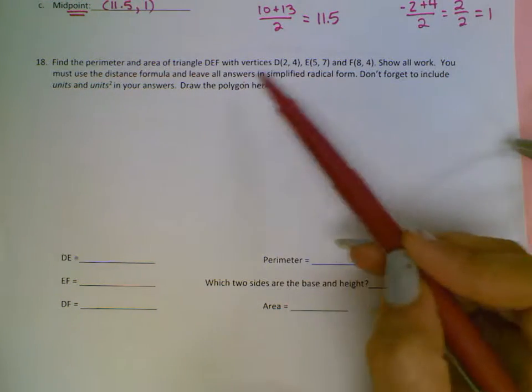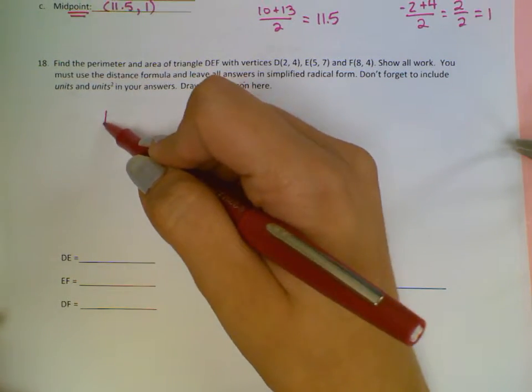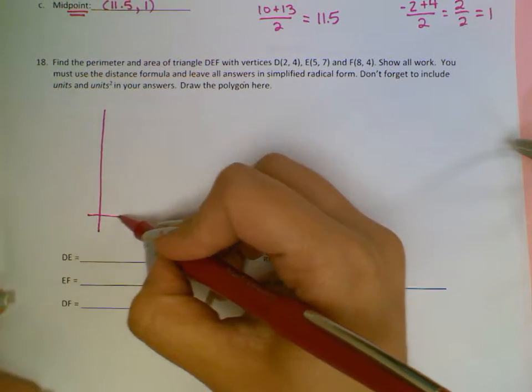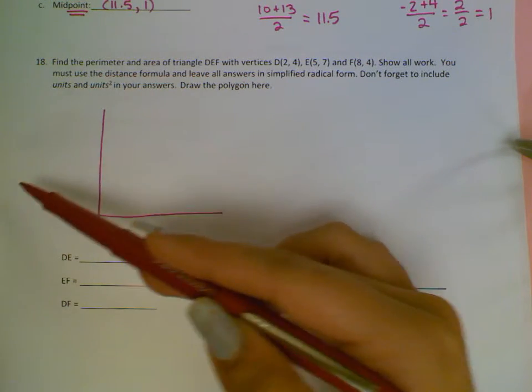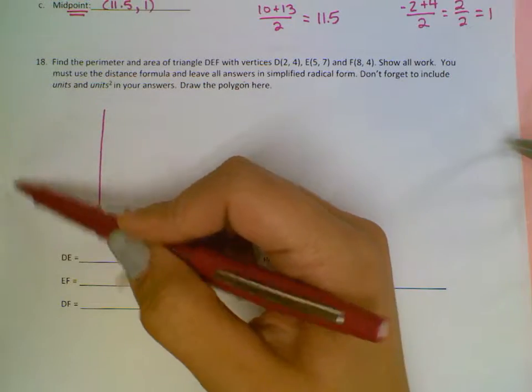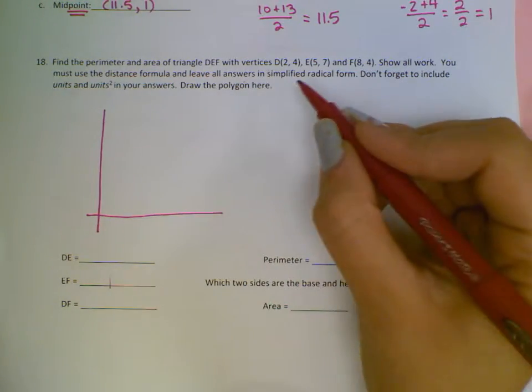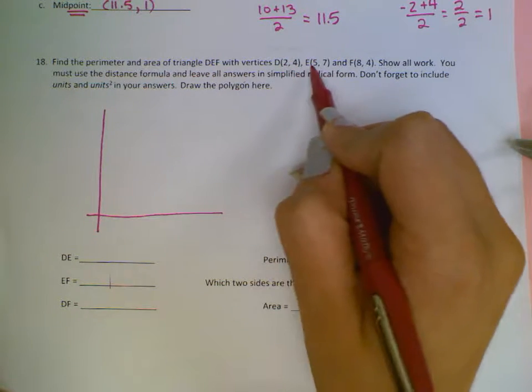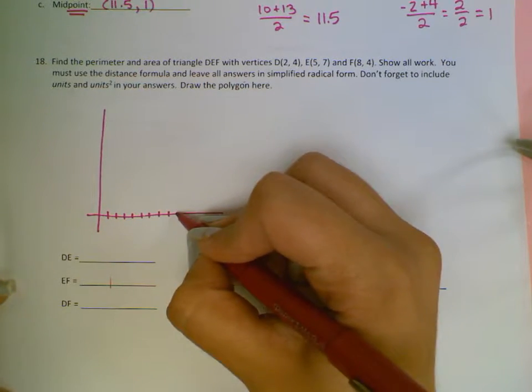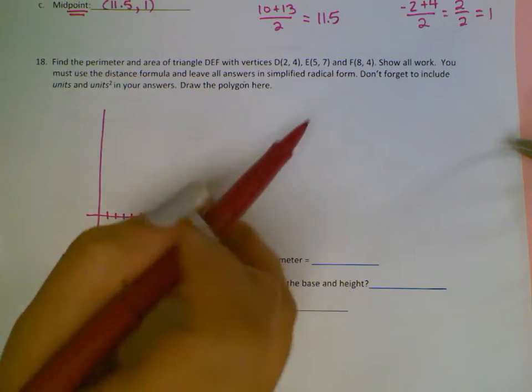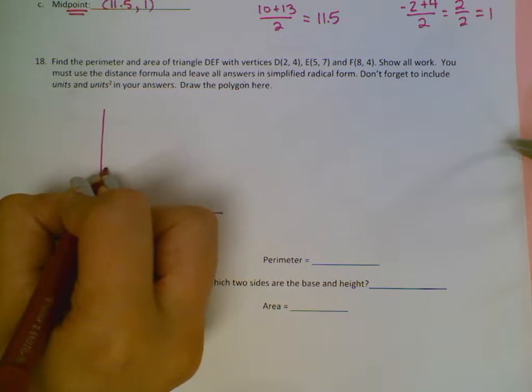I'm going to go ahead and draw a coordinate plane. Everything is positive. All these numbers are positive. So I don't need to worry about anything taking place in the negative quadrants. Because negative X would be in the left quadrants, and negative Y would be in the bottom quadrants. So my X's go from 2, 5, and 8. So I'll count 1 through 10 on the x-axis. And my Y's go up to 7 as the highest. So I'll count 1 through 7 on the y-axis.